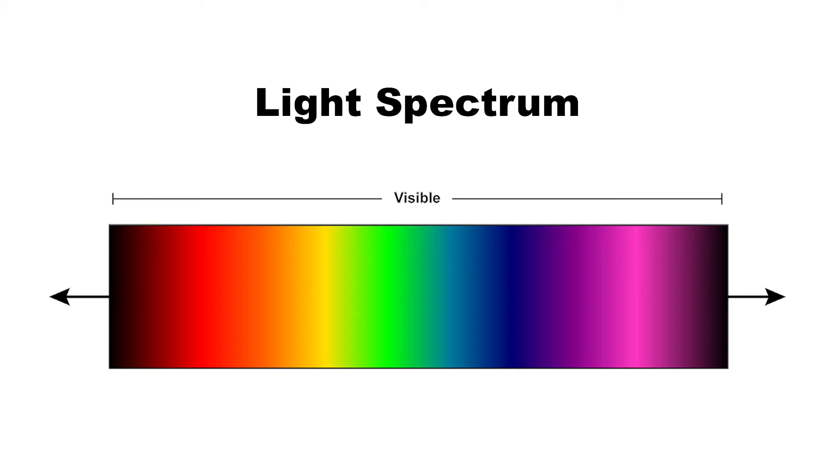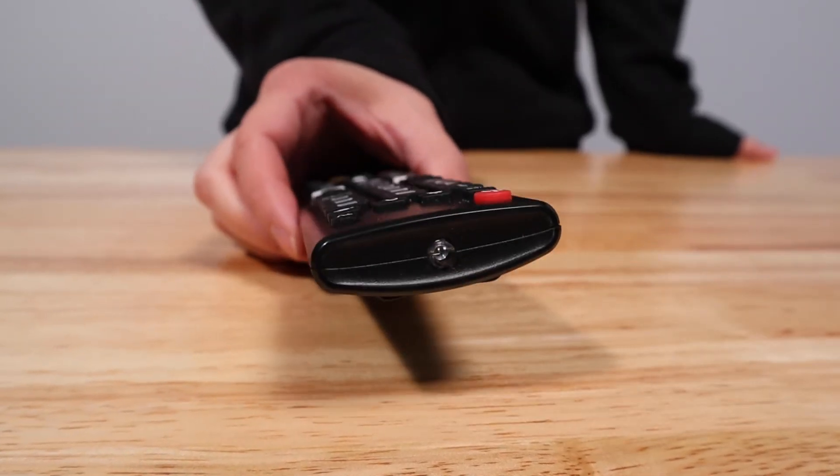Below the visible light spectrum is infrared, or IR light. IR LEDs are often used in remote controls.